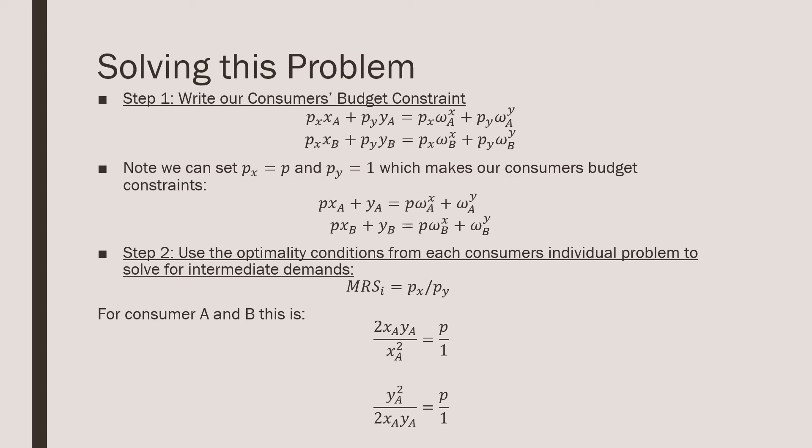Step number two is that we're going to use the optimality conditions from each consumer's individual problems to solve for their intermediate demands. You can use a Lagrangian for solving it, but the Lagrangian is just used to derive this optimality condition. For consumer A and consumer B, we have the marginal utility from consumption of good X over the marginal utility for consumption of good Y equals the price ratio of these two.